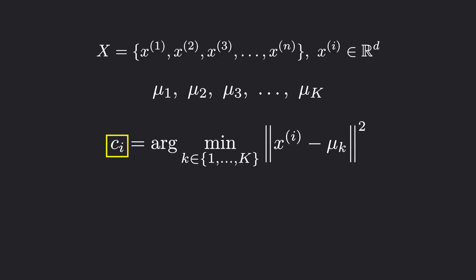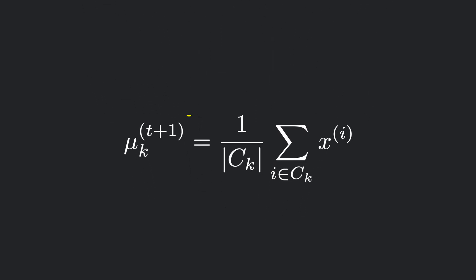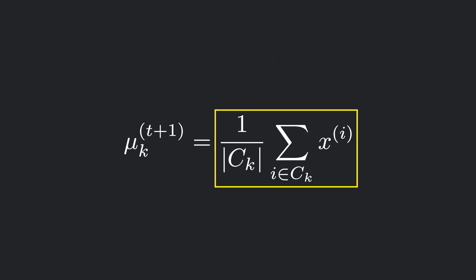This assignment is represented using c_i, which indicates the cluster to which the i-th data point belongs. Once the points are assigned to the cluster, the next step is to update the centroids. For each cluster, we take all the data points assigned to it and compute their mean position. That average becomes the new centroid for the next iteration.